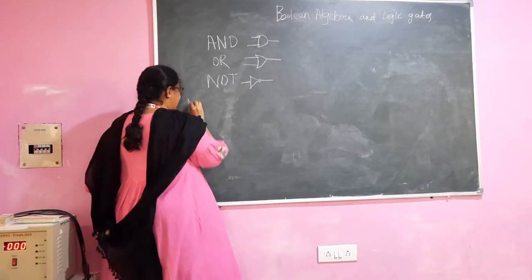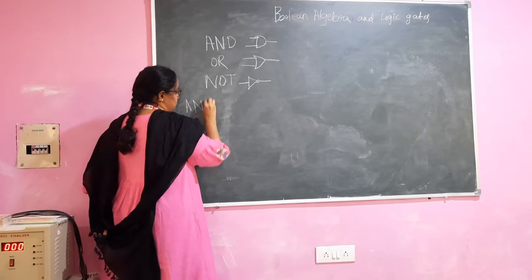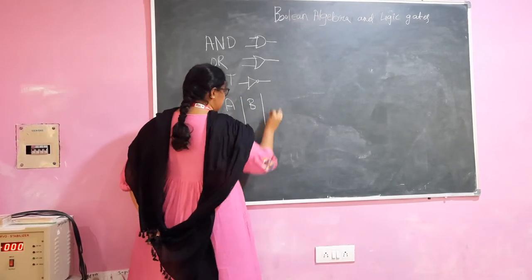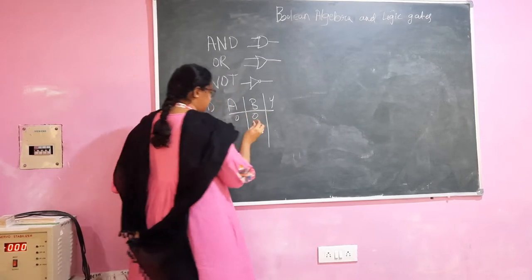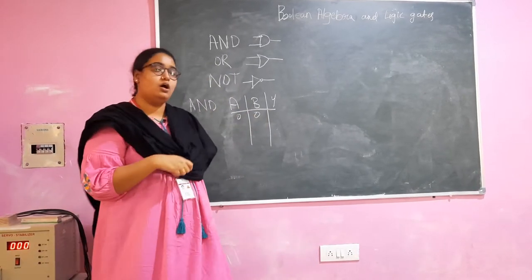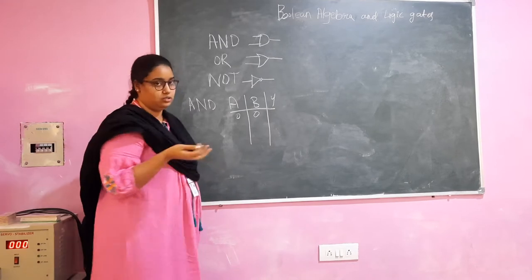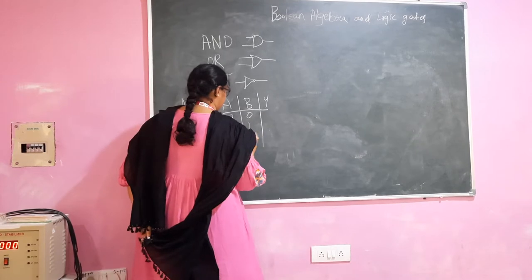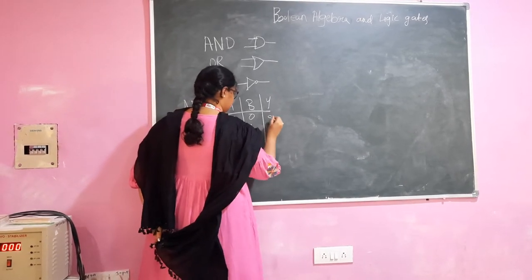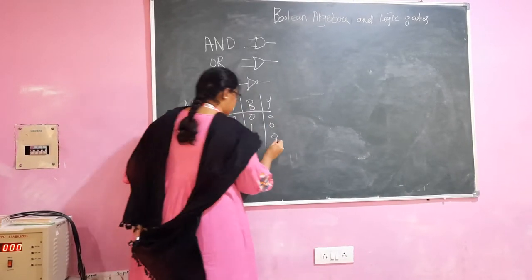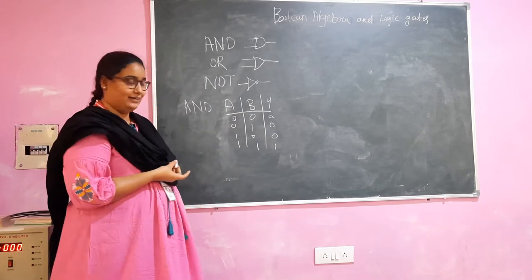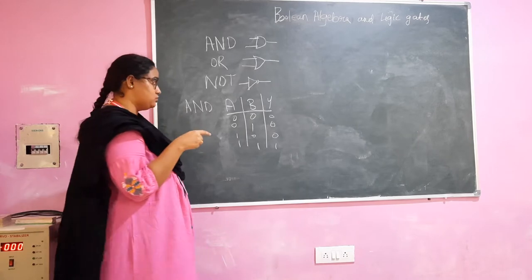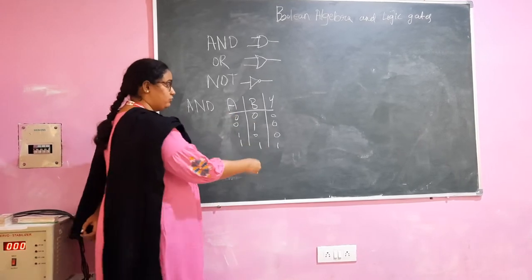The truth table of the AND gate has two inputs and one output, and it is a multiplication operation. The inputs would be only 0 and 1 since it is a binary operation. This is the truth table of an AND gate — both inputs are multiplied with each other, and this is what the output will be.